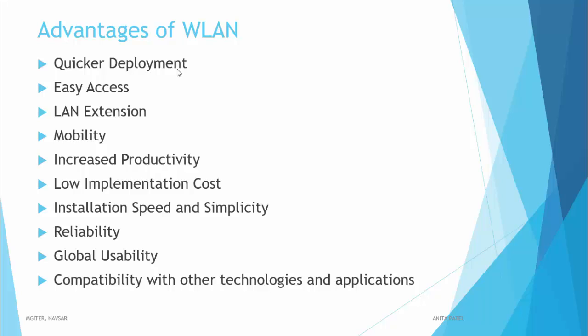Mobility — WLAN mobility means the subscriber can access the network from anywhere within the range of an access point. Increased productivity: they have a direct impact on increased productivity because of the minimum setup required and centralized access to the system database. Low implementation cost — the initial cost for installation is the same as wired LAN; however, after installation, a lot of expenses are saved on maintenance, labor charges, wiring, etc.